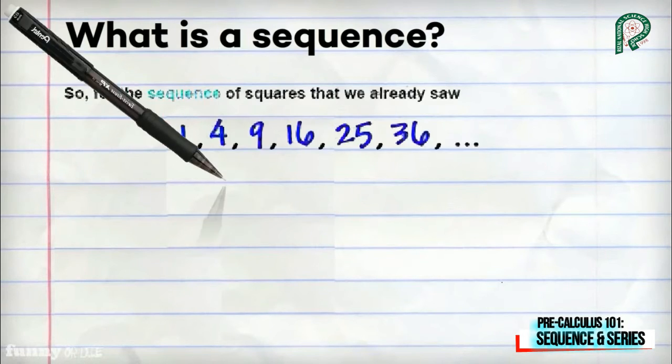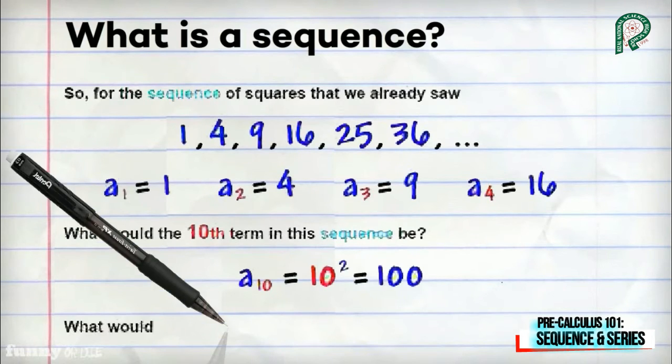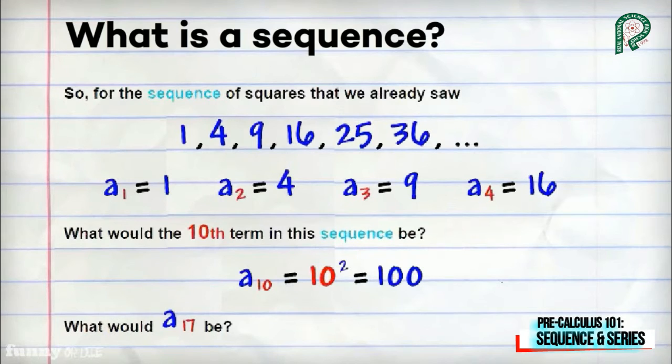We have 1, 4, 9, 16, 25, 36. a sub 1 equals 1, a sub 2 equals 4, a sub 3 equals 9. The question: what would be the 10th term? Let's analyze. 1, 4, 9, 16 are perfect squares. And if we get the roots, we get 1, 2, 3, and 4. The sequence is now clear. Therefore, a sub 1 is just the square of 1, a sub 2 is just the square of 2, and a sub 10 is just the square of 10, which equals 100.